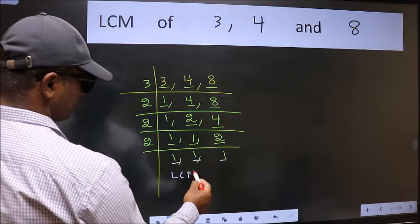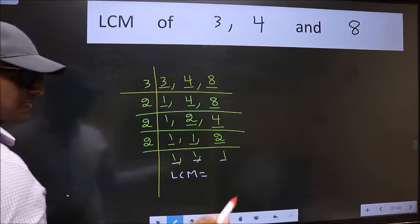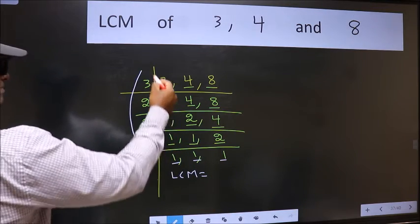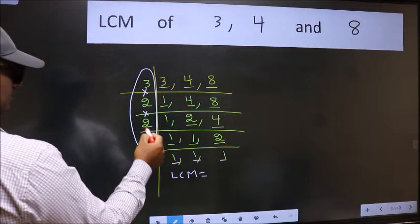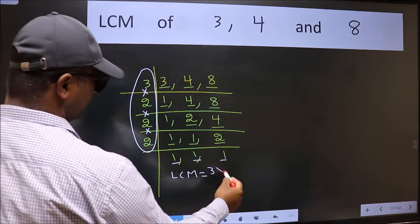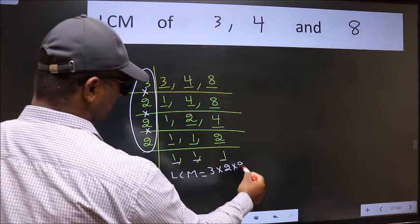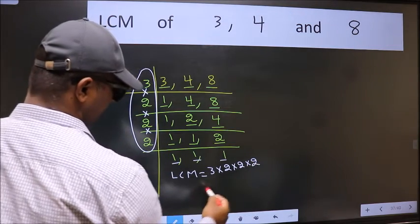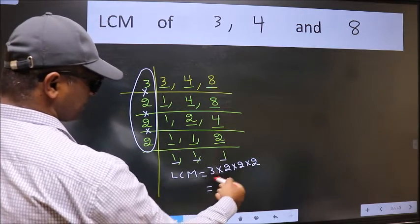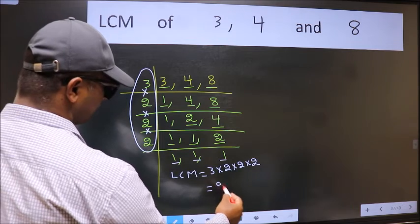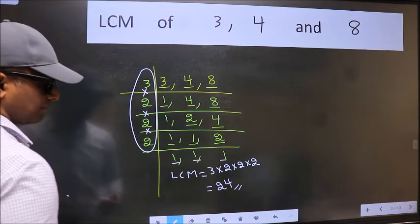So our LCM is, LCM is the product of these numbers. That is 3 into 2 into 2 into 2. When we multiply these numbers we get 24. We get 24 is our LCM.